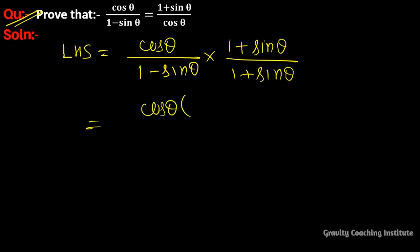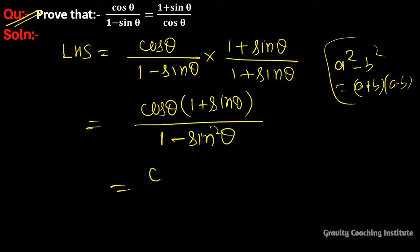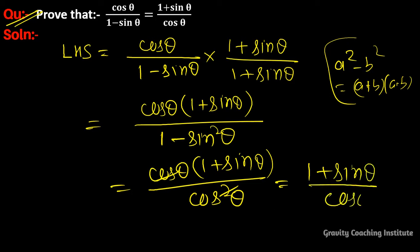So cos theta multiplied by bracket 1 plus sin theta, and we use the identity a squared minus b squared equals a plus b times a minus b. So 1 squared minus sin squared theta gives cos theta times 1 plus sin theta upon cos squared theta. The cos theta cancels, so we get 1 plus sin theta upon cos theta, which equals RHS. Hence proved.